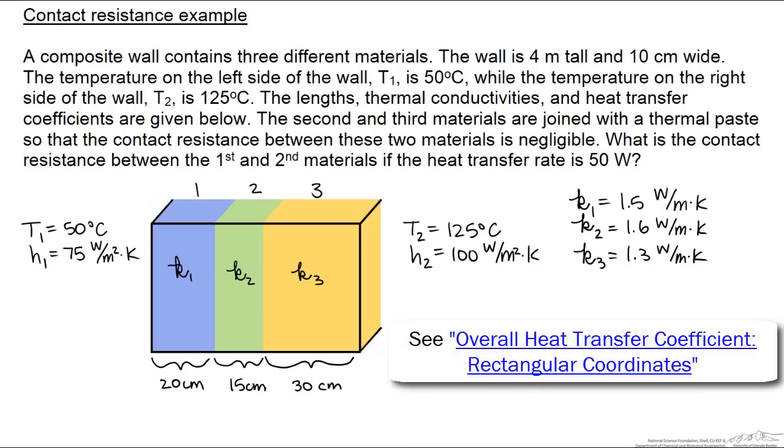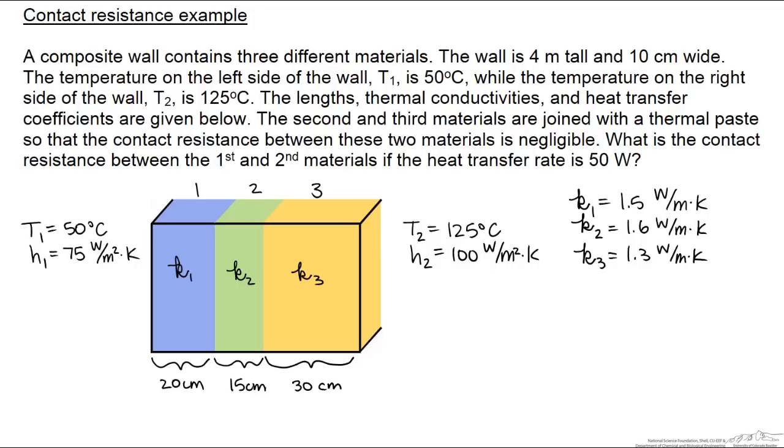In a previous screencast, we showed how to find an overall heat transfer coefficient using conductive and convective resistances. Here we will use this method to calculate a contact resistance in a composite wall.